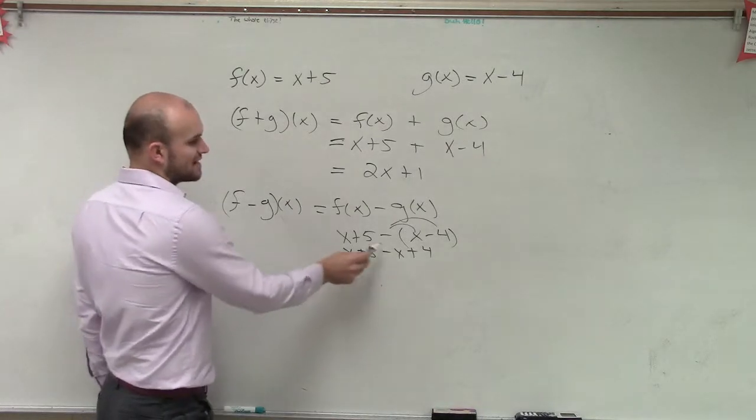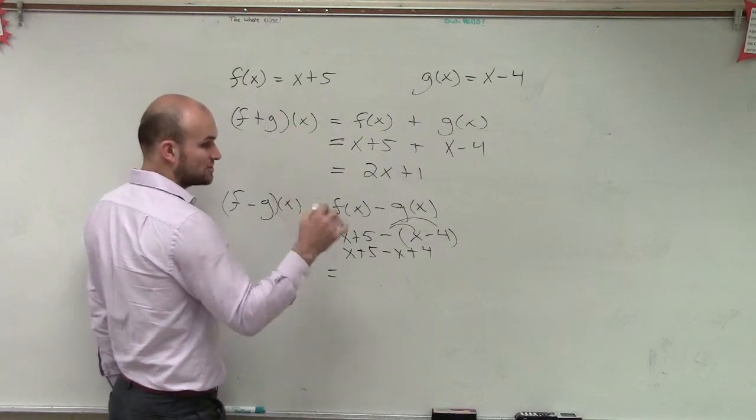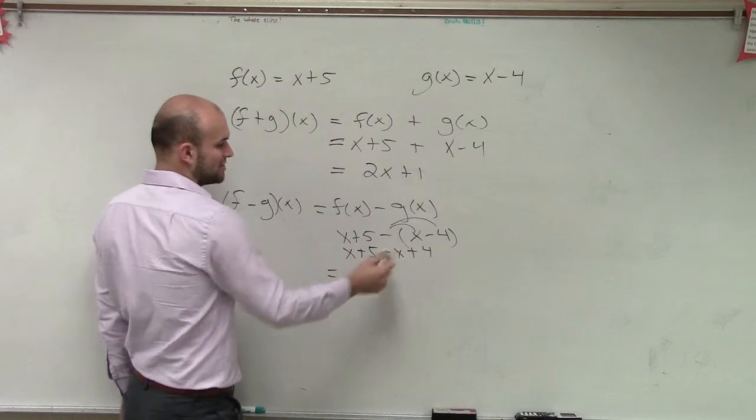So now, when I combine like terms, x minus x is 0x, which is 0. And then 5 plus 4 is 9.